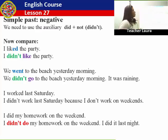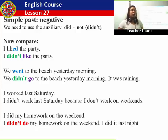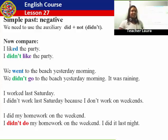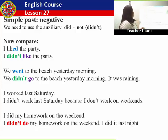Simple past, negative. So, to make negative sentences using the simple past, we need the auxiliary verb 'did' plus 'not', or the short form 'didn't'. Alright? Let's see some sentences. I liked the party. I didn't like the party.